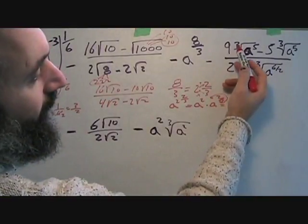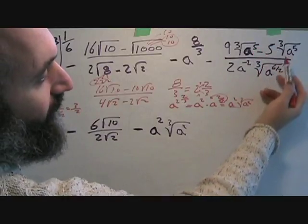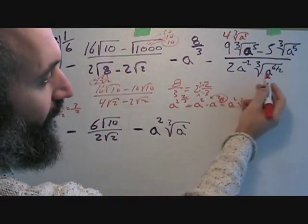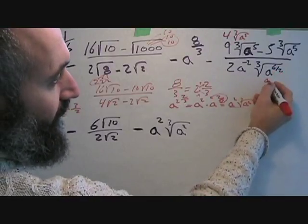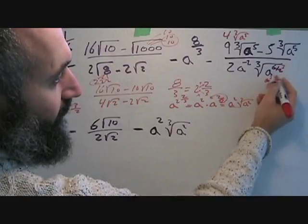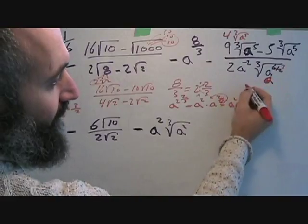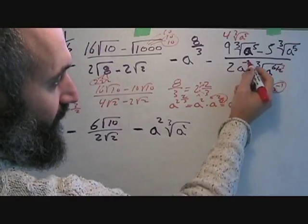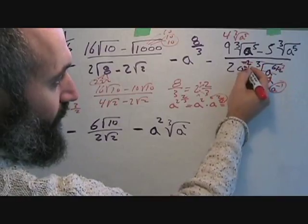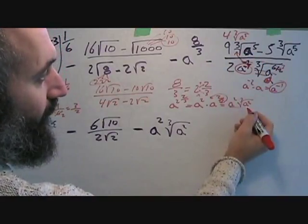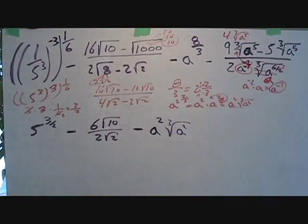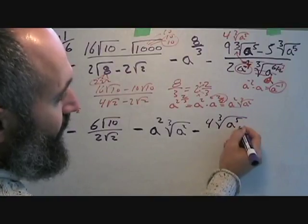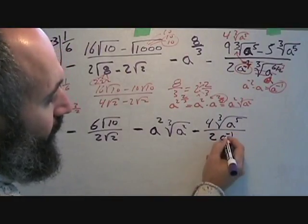So this would be a² times the cube root of a². Over here, these are like terms and simplify straight up: 9 cube root of a to the fifth minus 5 cube root of a to the fifth is 4 cube root of a to the fifth. Over here, 6 divided by 2 is 3, so this becomes a cubed — cube root of a cubed is just a. Then a to the negative two times a is a to the negative one, and a negative power kicks up, so this becomes minus four cube root of a to the fifth over a to the negative one.